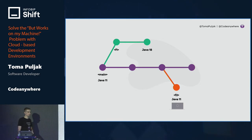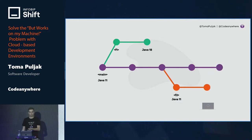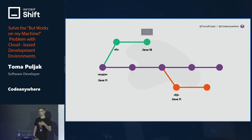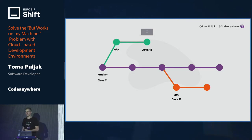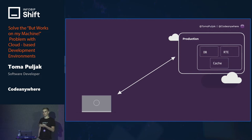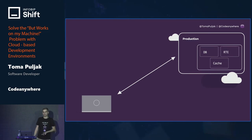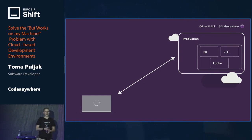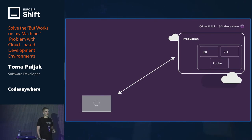You waste time with that reconfiguration process. You fix what needs to be fixed in the Java 11 branch, then move back to Java 18 and need to upgrade your environment again. This process repeated for all your colleagues can be a huge time and resource waster. There's also the problem of the huge gap between your local environment and production — your local clone is just a low-fidelity environment, and you often mock services because they're too heavy to run locally.